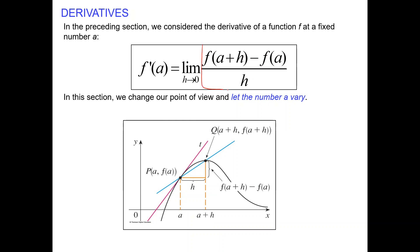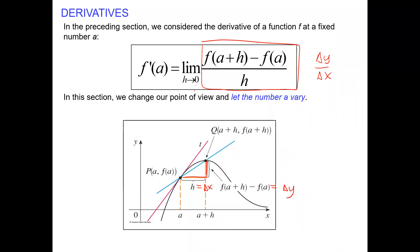We know that this difference quotient represents the difference in y's over the difference in x. The rate is the slope — the slope of the secant line. This is the change in y, and h is the change in x coordinates between point P and point Q. But when we make h almost zero, arbitrarily close to zero, we create the slope of the tangent line.